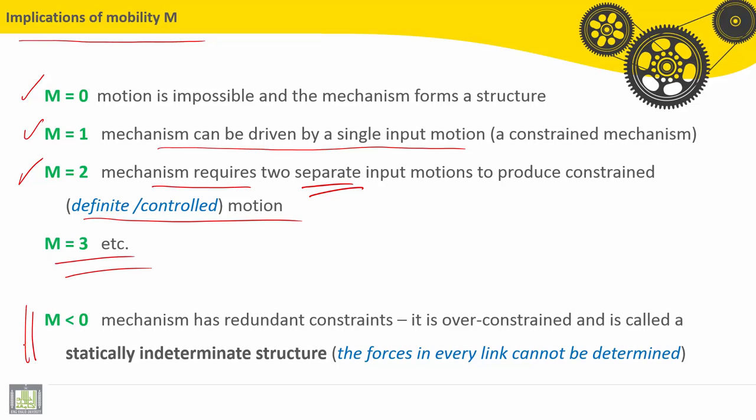If the mobility M is negative, the mechanism has redundant constraints. It is over-constrained and it is called a statically indeterminate structure. The forces in every link cannot be determined.